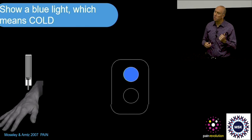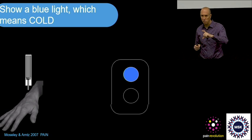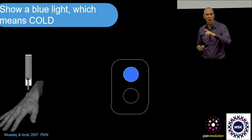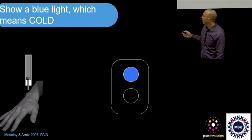For every single stimulus they got, the probe was always the same temperature, real temperature. It was always minus 20 degrees, which is very cold, but not particularly dangerous for more than a few seconds.